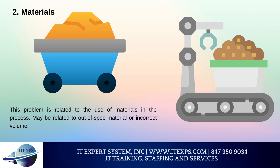2. Materials: This problem is related to the use of materials in the process. It may be related to out-of-spec material or incorrect volume. For this reason, it is extremely important to have a good relationship with your supplier, so that he offers correct products in the right quantity and, of course, in the ideal quality.